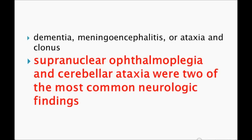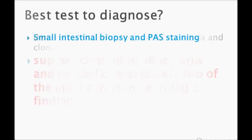The three neurological findings to concentrate on for USMLE are: first, arthralgia with joint swelling; second, neurological manifestations in the form of dementia, meningoencephalitis, ataxia, or clonus; and third, ophthalmologic involvement in the form of supranuclear ophthalmoplegia and cerebellar ataxia — the two most common neurological findings.